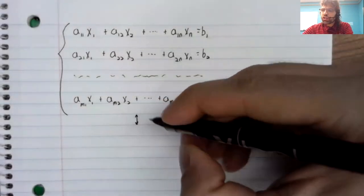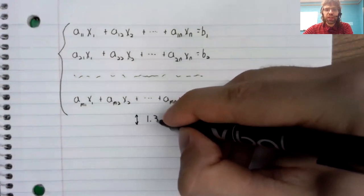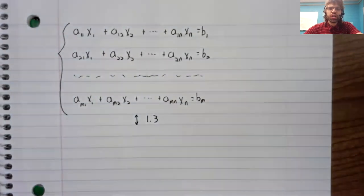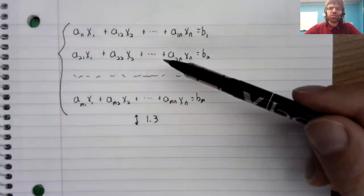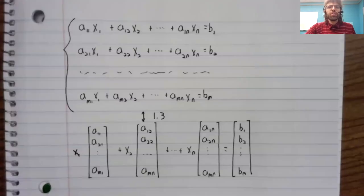In section 1.3, we made the observation that any system of linear equations can be rewritten as a vector equation and vice versa.